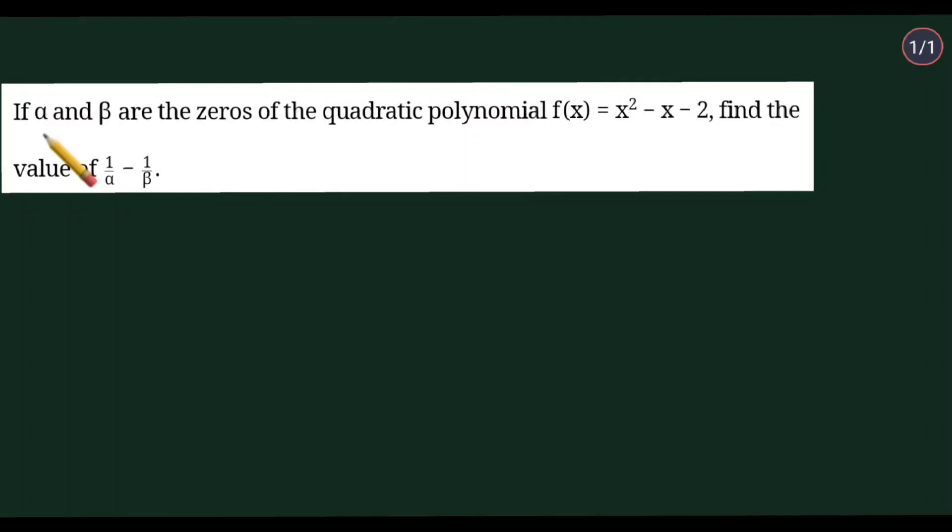Hello everyone, so let us understand this question on polynomials. If alpha and beta are the zeros of the quadratic polynomial x square minus x minus 2, find the value of 1 by alpha minus 1 by beta.